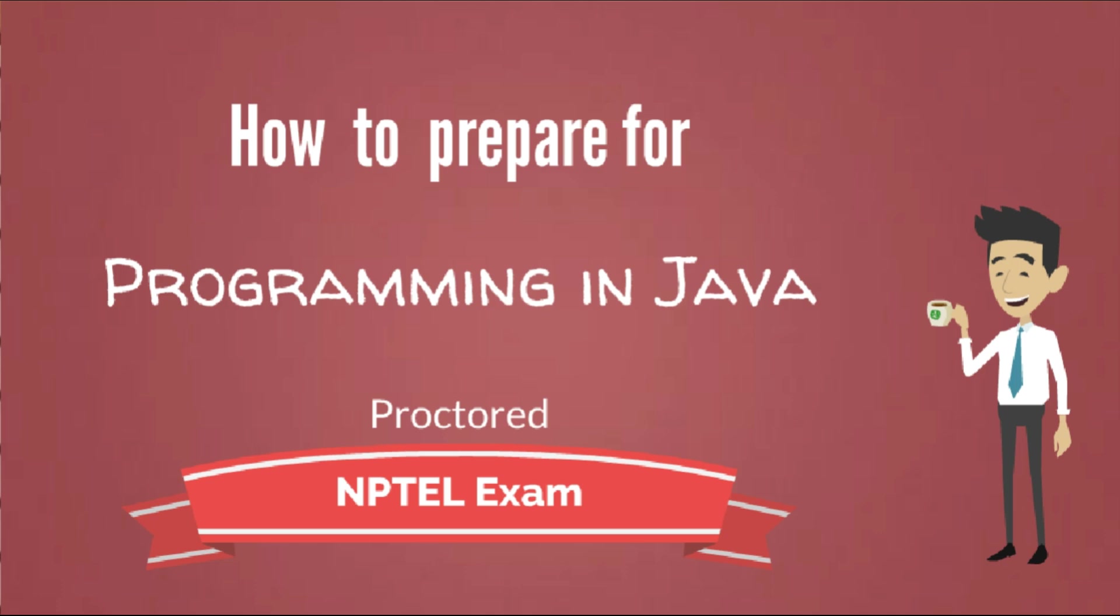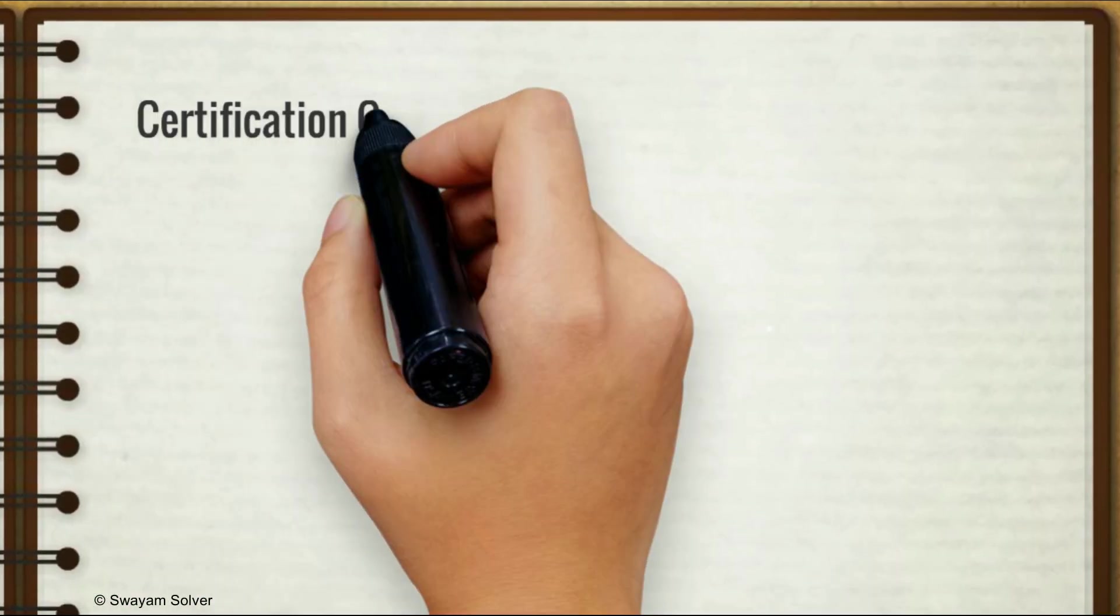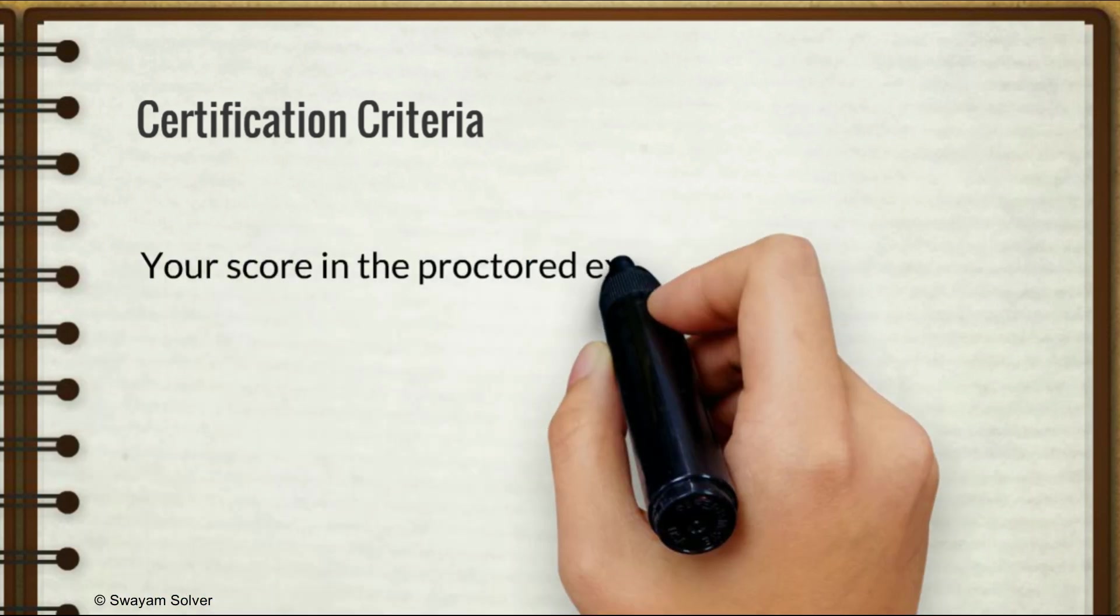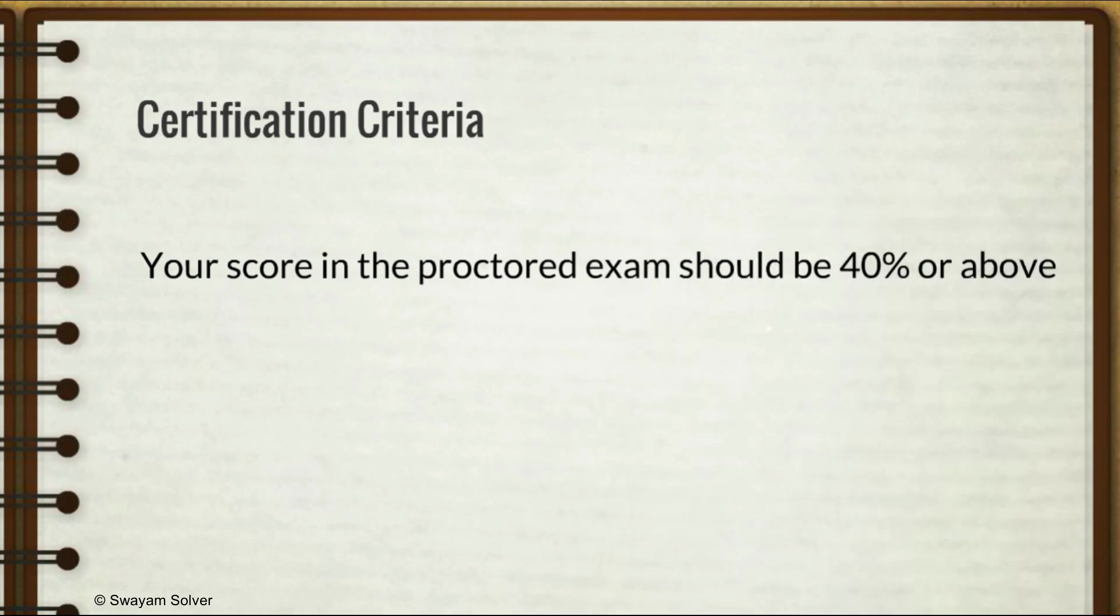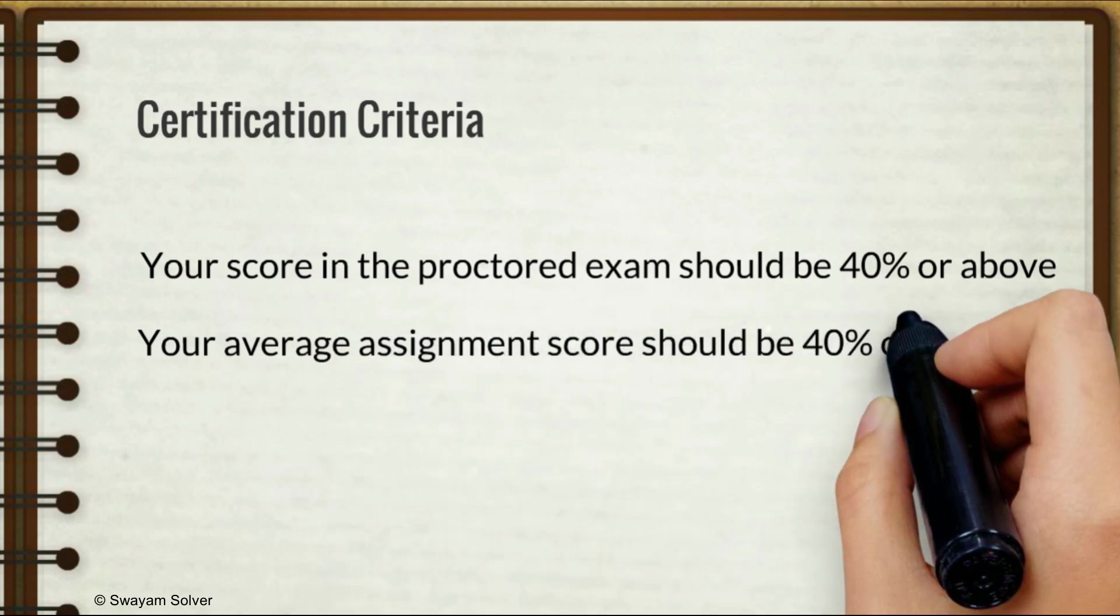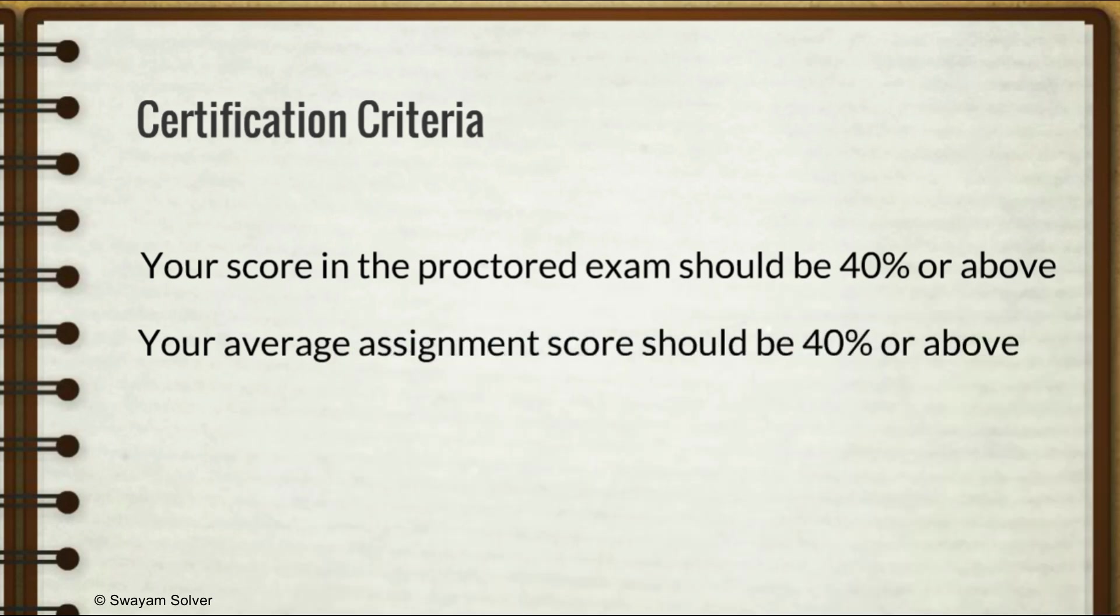Without wasting further time, let's start with certification criteria. There are two conditions which you have to satisfy so that you can get an NPTEL certificate. First, you have to score at least 40 percent in the upcoming NPTEL exam. Along with that, average score of the assignments you have submitted over the last three months should be at least 40 percent. Remember that when calculating your average assignment score, only your best 8 assignments are considered out of the 12 assignments given in the course.